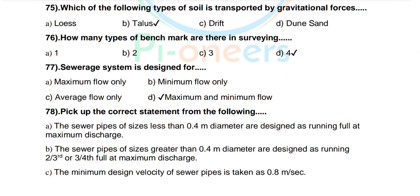Question number 77: Sewerage system is designed for maximum flow only, minimum flow only, average flow only, or maximum and minimum flow. Correct answer: maximum and minimum flow.